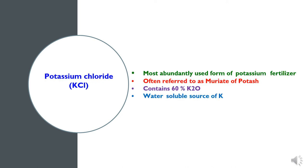The first kind of Potassium fertilizer is Potassium Chloride, most commonly known as Muriate of Potash or MOP. This is the most abundantly used form of Potassium fertilizer, containing 60% Potassium as K2O. It is a water soluble source of Potassium.